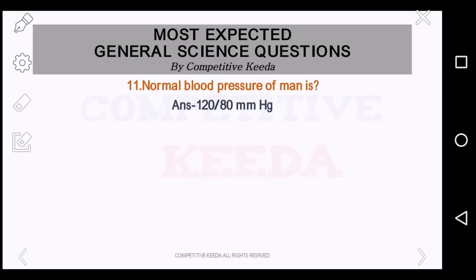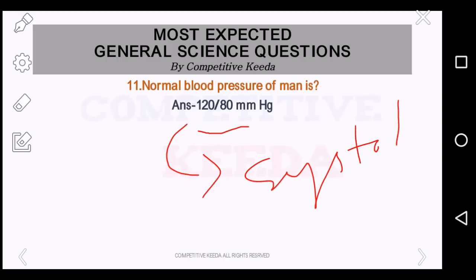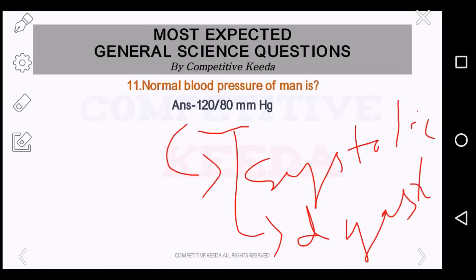The normal blood pressure of a human is what? It is 120/80 millimeters of mercury. The 120 is the systolic pressure and 80 is the diastolic pressure. When your heart beats, it contracts and pushes blood through the arteries to the rest of your body — this force creates pressure in the arteries and is called systolic pressure. Diastolic pressure indicates the pressure in the arteries when the heart rests between beats. So while at rest it is diastolic pressure, and while it contracts it is systolic pressure.